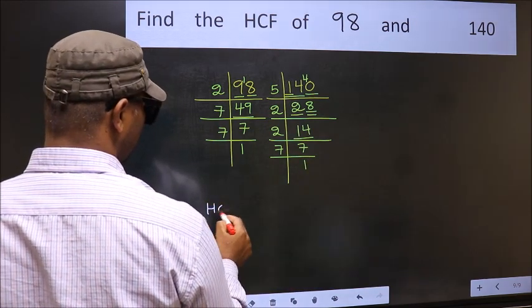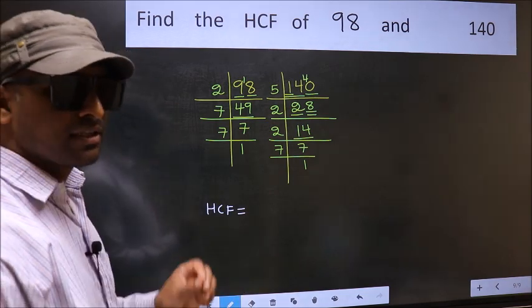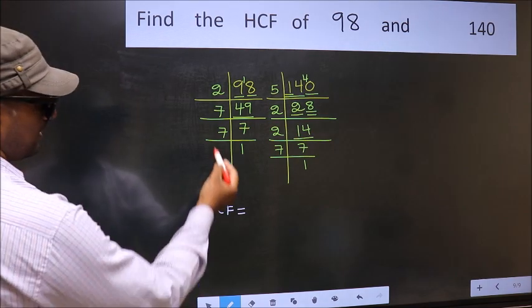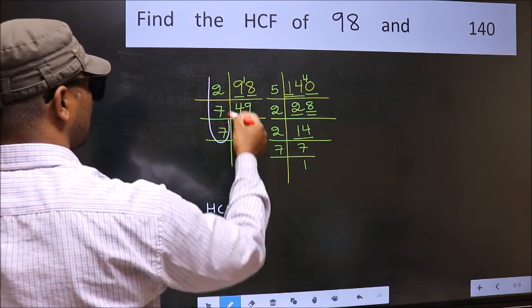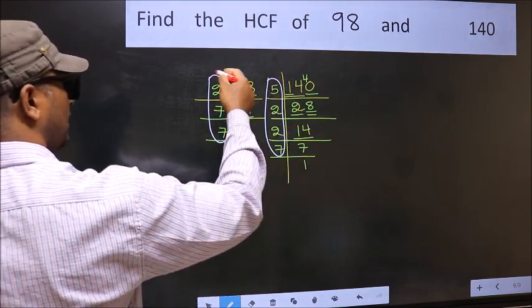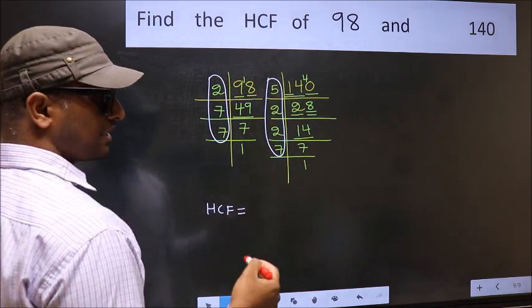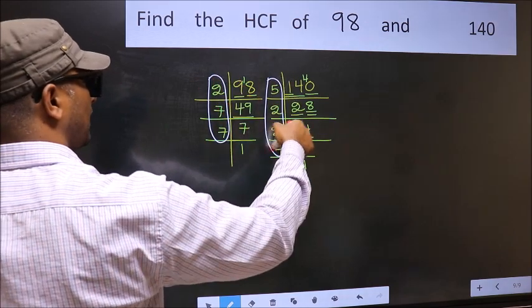Therefore, our HCF is the product of the numbers which should be present in these 2 places. That is here and also here, here and here. So now let us find the numbers which should be present here and here.